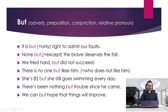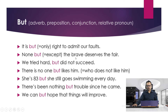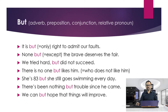Next example: 'None but the brave deserves the fear.' So 'none but' means 'none except the brave.' Here 'but' is a preposition because it comes before the noun phrase. 'None' is a pronoun, 'but' is a preposition meaning 'except', and 'the brave' — 'brave' is normally an adjective, but when we add 'the' before an adjective it becomes a noun, so 'the brave' together functions as a noun.